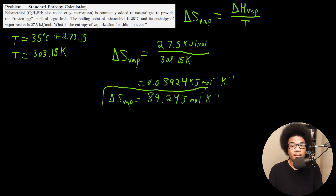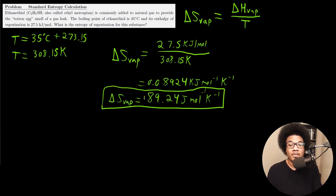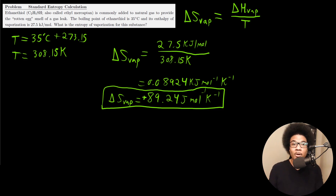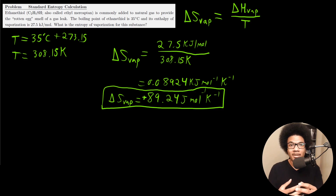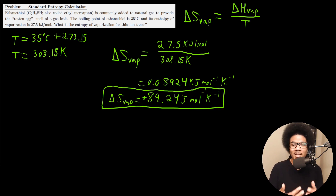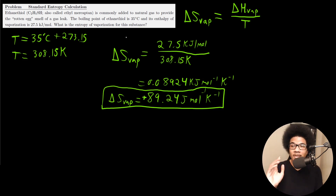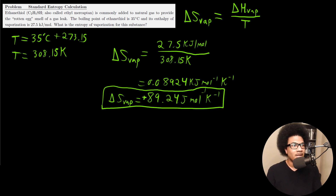This entropy of vaporization is positive, which makes sense — vaporization involves going from a liquid to a gas, a huge increase in entropy as the substance goes from a relatively ordered liquid to a relatively disordered gas phase. So that's two examples of calculating entropy, giving you practice with how to use these equations.